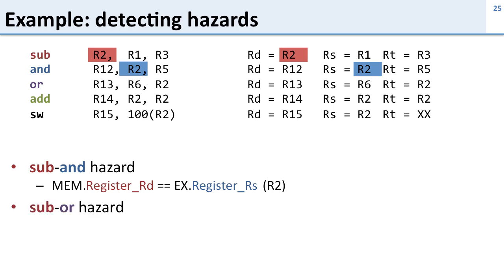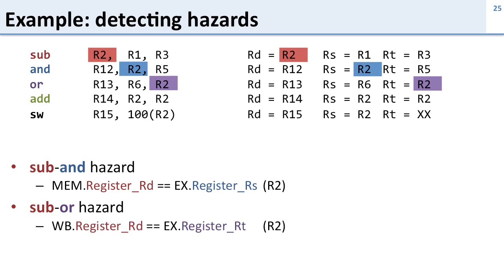How about between the subtract and the OR? The OR also uses R2 as one of its source registers. The logic is going to see that when the subtract instruction is in the writeback stage, its destination is going to be the same as the OR instruction's source register when it's in the execute stage. So these are two cycles apart, making it a hazard between the execute and the writeback stage.